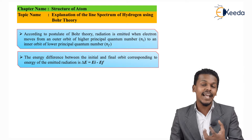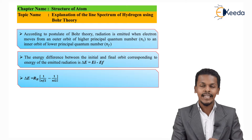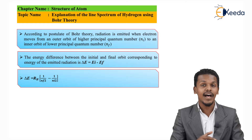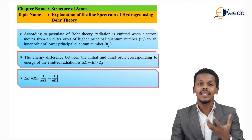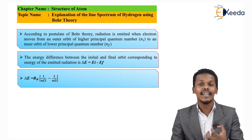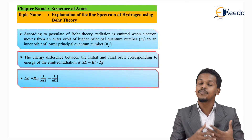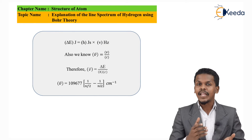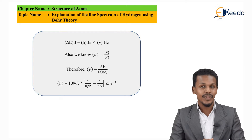We have another equation related to the energy difference: delta E equals R_H times the square bracket of (1 upon Nf squared minus 1 upon Ni squared), where Nf is the orbit with the lower quantum number and Ni is the orbit with the higher quantum number. We also know that delta E equals h — Planck's constant — times the frequency in Hertz.